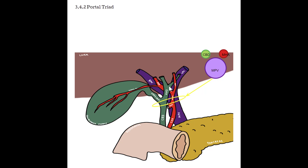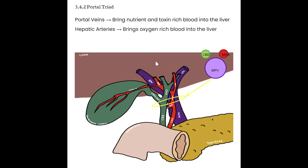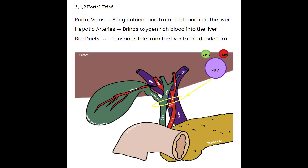The main portal vein sits posterior, the main hepatic artery sits more to the patient's left, and the common bile duct sits anterior to the portal vein more to the patient's right. Portal veins bring nutrient and toxin-rich blood into the liver, hepatic arteries bring oxygen-rich blood, and bile ducts transport bile out to the duodenum. We'll focus on the hepatic artery and portal veins for vasculature. The hepatic artery brings about 20 to 30 percent of the total blood volume.